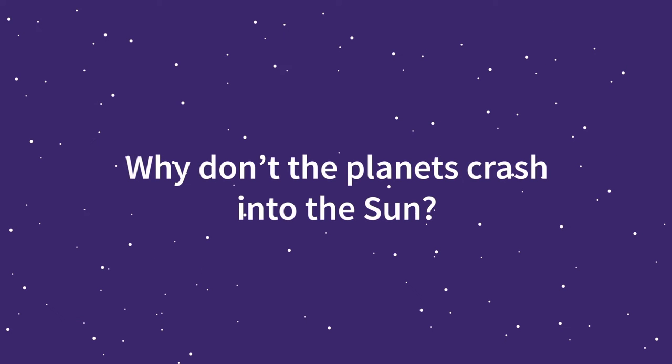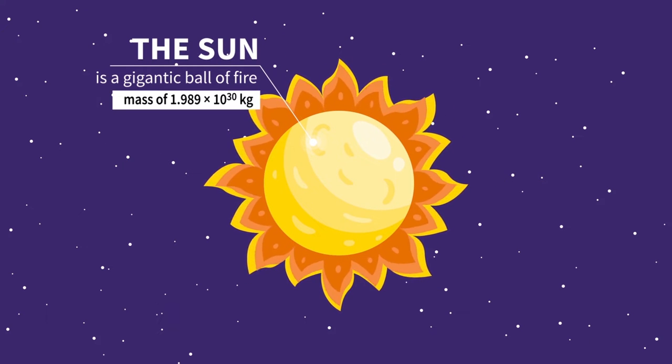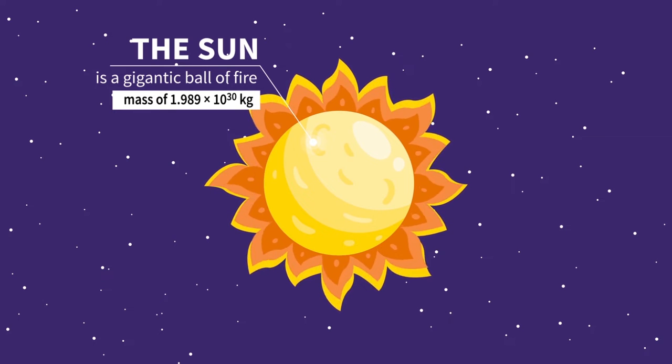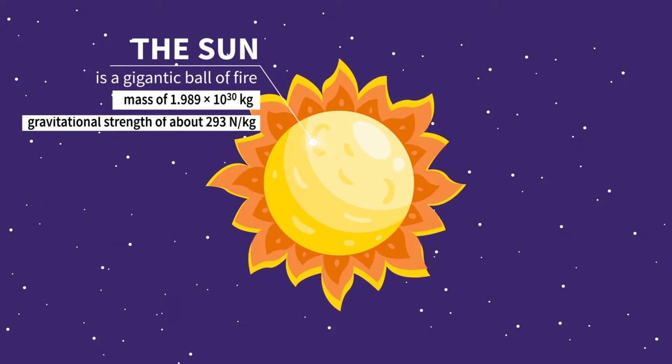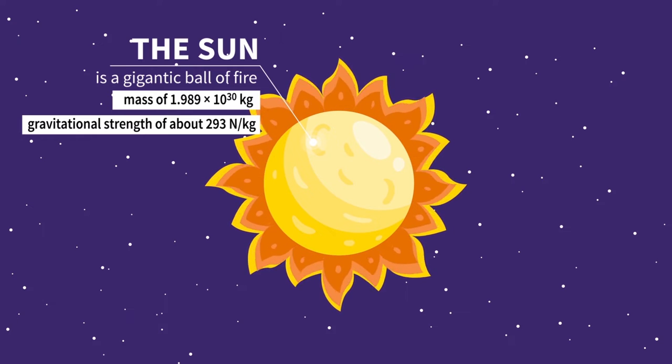Why don't the planets crash into the Sun? The Sun is a gigantic ball of fire with a mass of 1.989 x 10 to the power 30 kg, and a gravitational strength of about 293 N per kg.